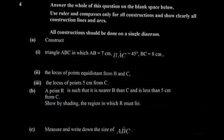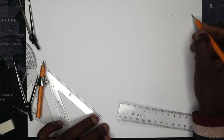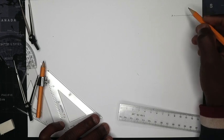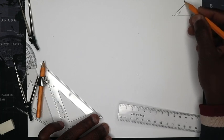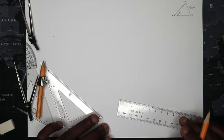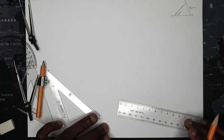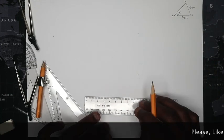The question says: construct triangle ABC in which AB equals 7 centimeters, angle BAC equals 45 degrees, and BC equals 8 centimeters. Do a sketch first. AB is used as the baseline — that's easiest. Angle BAC is 45 degrees here, so C is somewhere above. BC equals 8 centimeters. We need to construct this triangle given all that information.